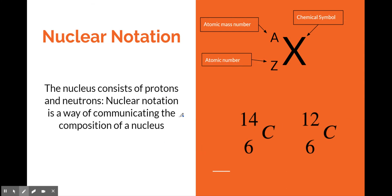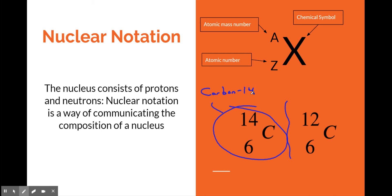When we talk about these different isotopes and want to write them in sentence form, we would call this one carbon-14. That tells us everything we need to know — it's carbon with its six protons, and 14 is the total number of nucleons. Sometimes people call the protons and neutrons the nucleons. So this would be carbon-14, 14 nucleons, as opposed to carbon-12 over here.